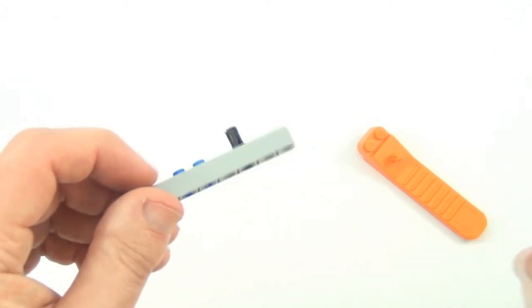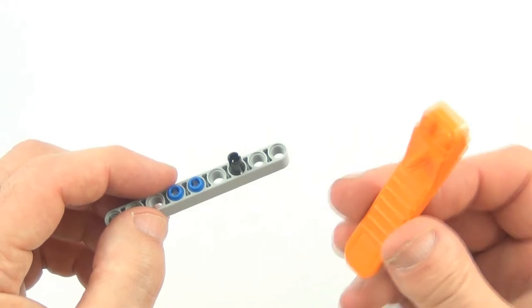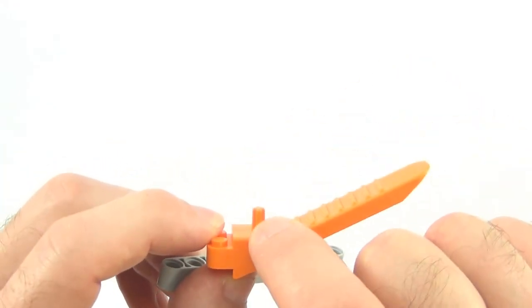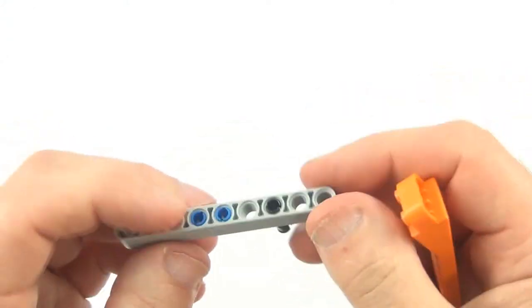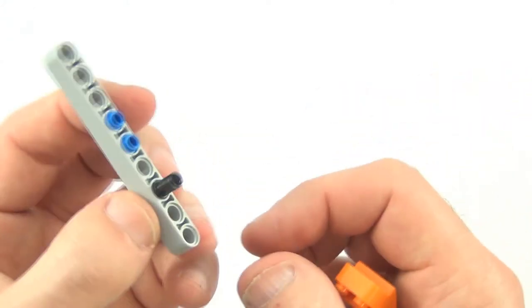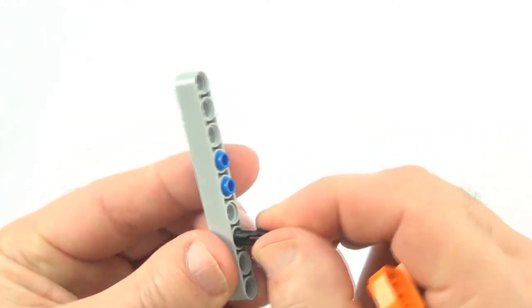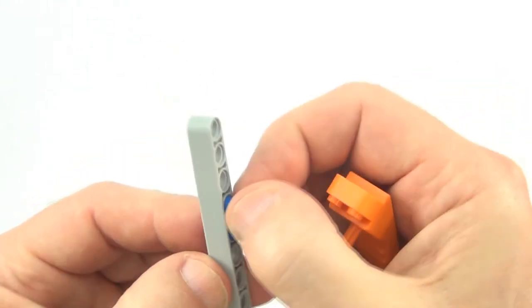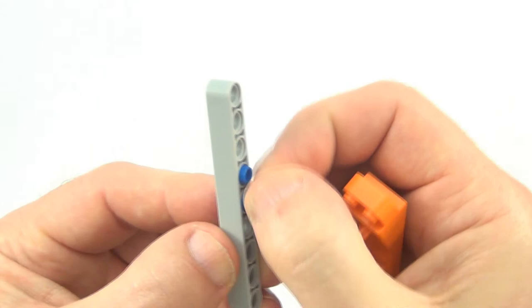Removing pins from Technic lift arms or beams using our brick separator, this time I'm going to use the axle or pin removal part. With a normal pin, I can pull that in and out very easily, so I won't need a brick separator, but with these half pins, it's basically impossible to pull them out.